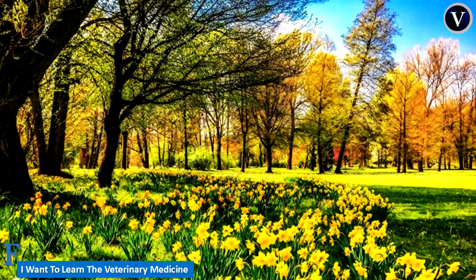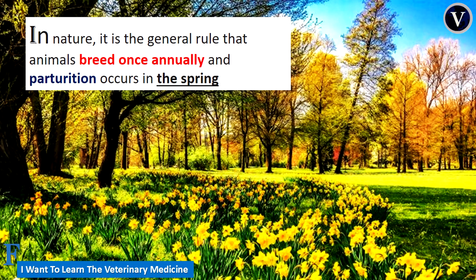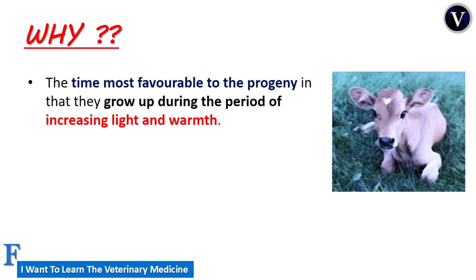If we think about nature, in nature the general rule is that animals breed once annually and parturition occurs in the spring. We ask ourselves: why does parturition occur in the spring? The first reason is that the time is most favorable to the progeny, in that they grow up during the period of increasing light and warmth.